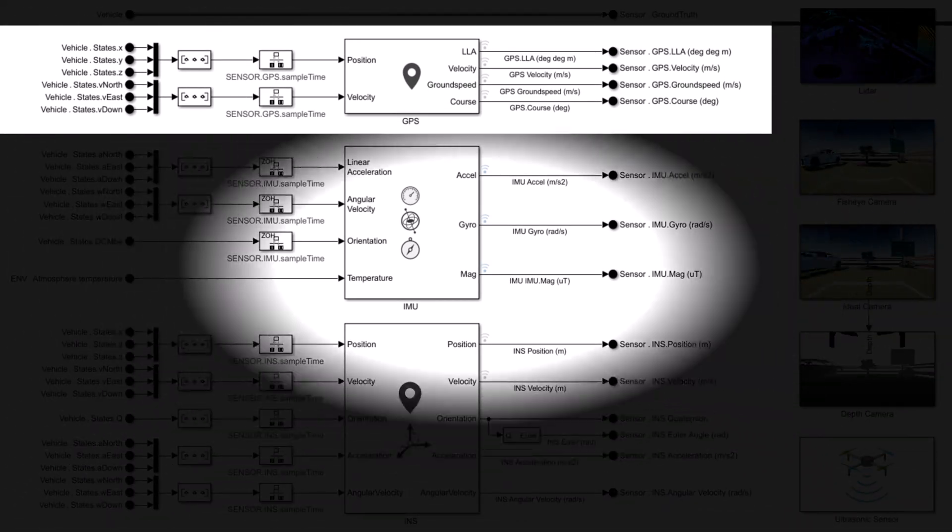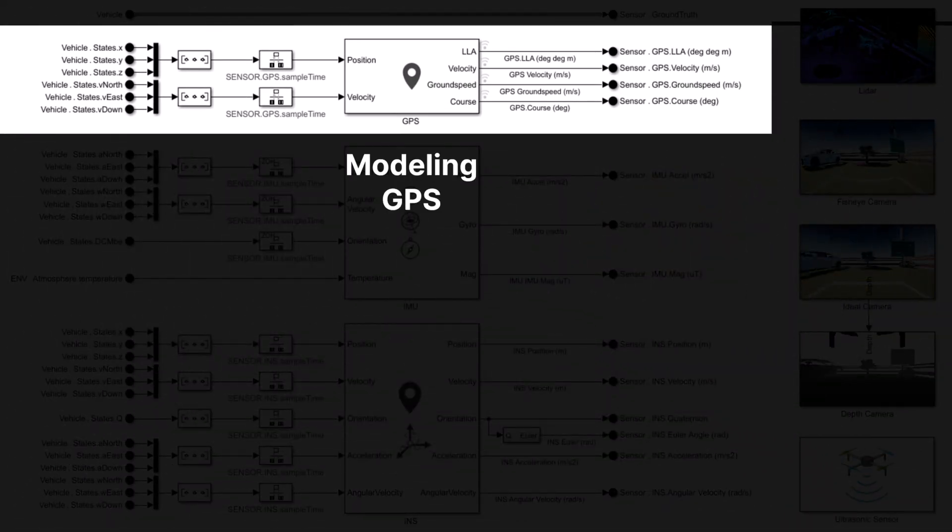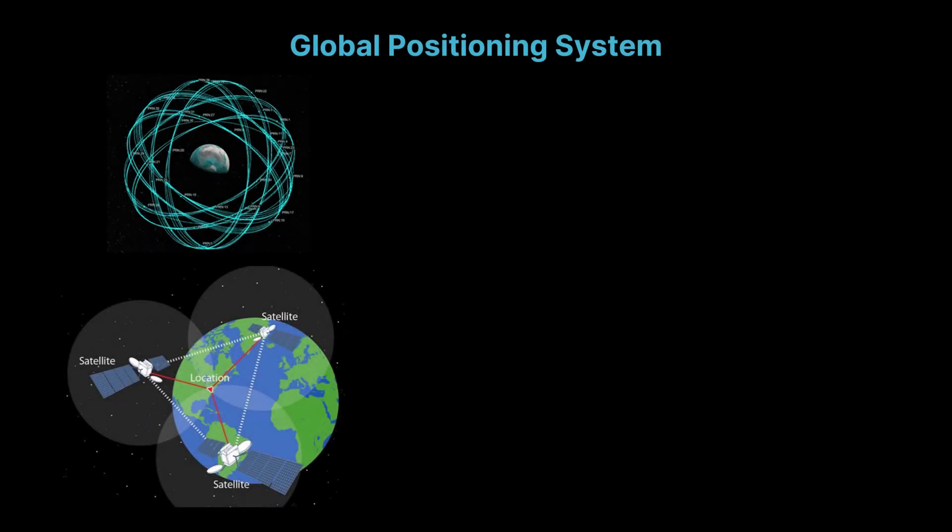We'll start by building a GPS model that outputs position, velocity and course information. The GPS, or Global Positioning System, is a satellite-based navigation system that provides geolocation and time information anywhere on Earth. A GPS receiver determines its position by calculating the time it takes for signals from multiple satellites to reach it.